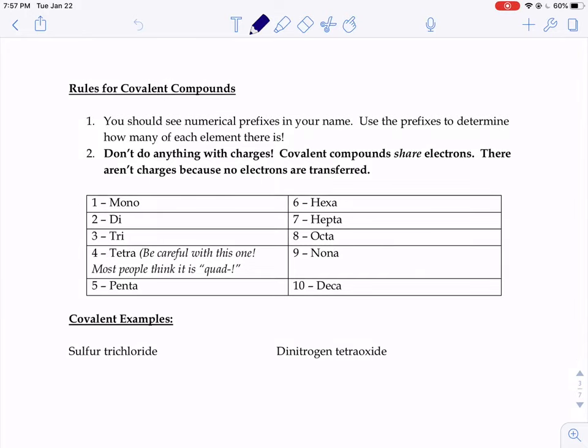We said a few minutes ago that there's one set of rules for ionic compounds and a different set of rules for covalent compounds. The way you'll know if you have a covalent compound by looking at its name is that you'll see numerical prefixes.